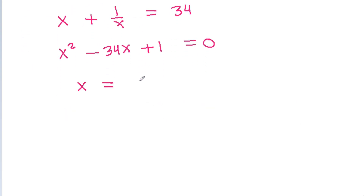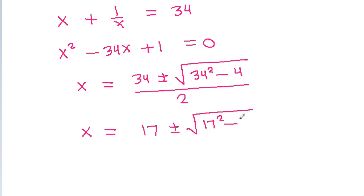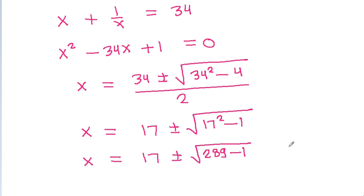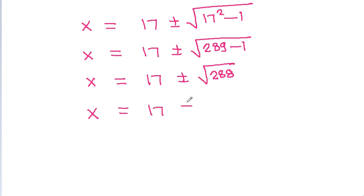Solving using the quadratic formula, x equals 34 plus or minus the square root of 34 squared minus 4, all over 2. Dividing by 2 gives x equals 17 plus or minus the square root of 17 squared minus 1, which is the square root of 289 minus 1, so the square root of 288. Therefore x equals 17 plus or minus 12 root 2.